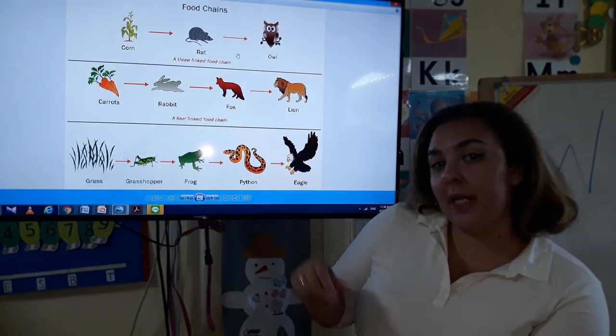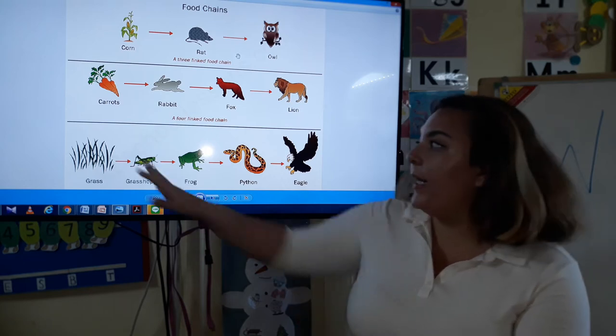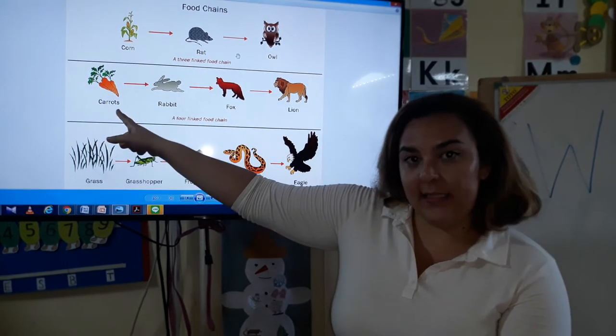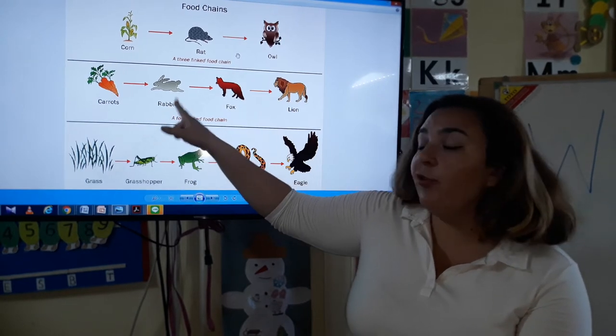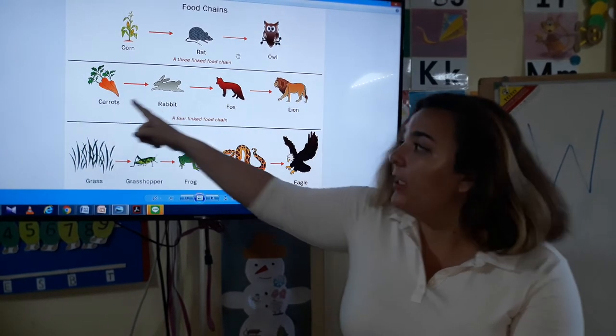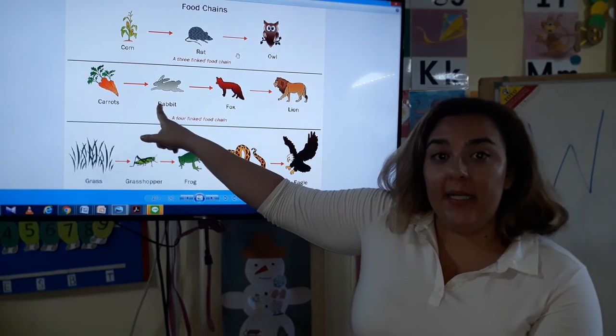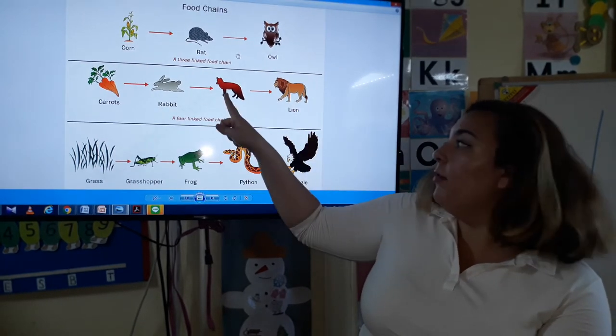Now something more complicated: you have carrots. Carrots are yummy, they're sweet, they're crunchy. The rabbit will eat the carrot, then the fox will eat the rabbit, and then a lion will eat the fox.